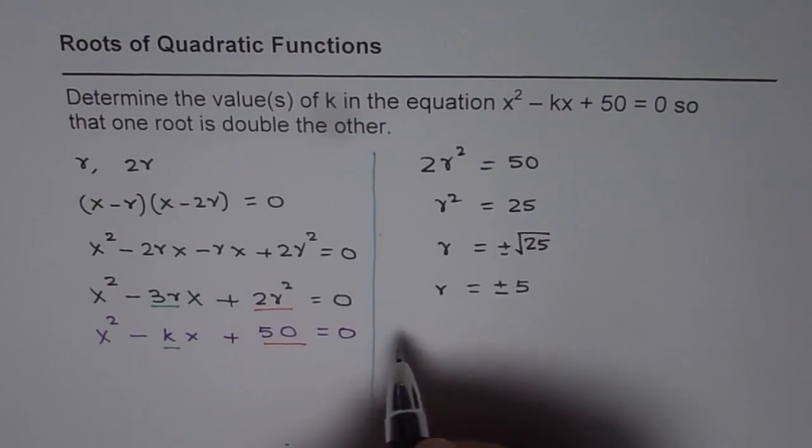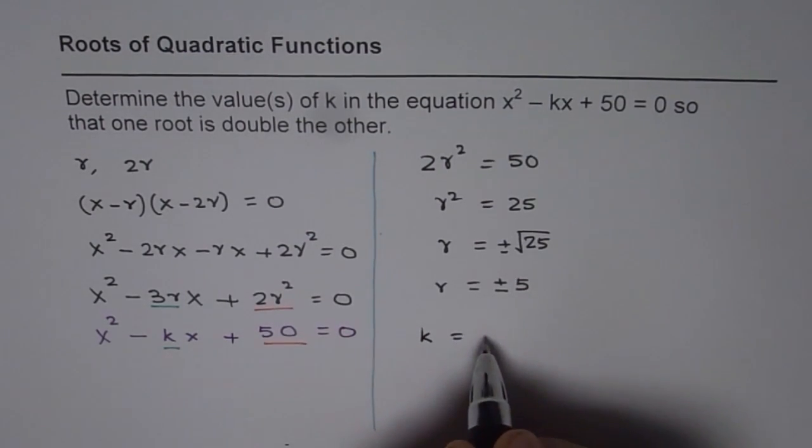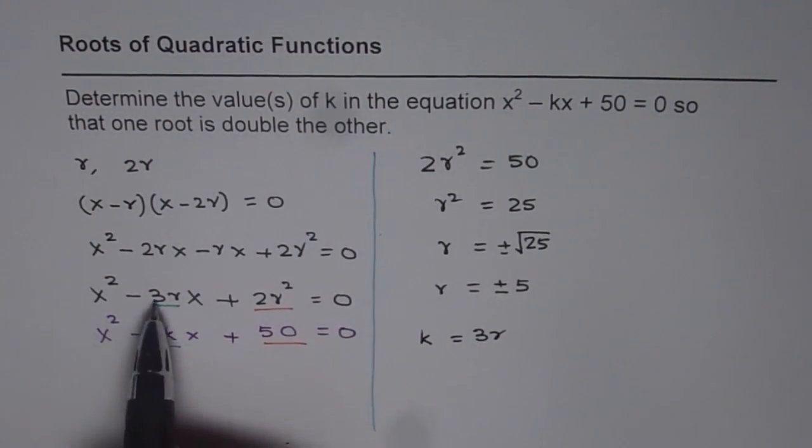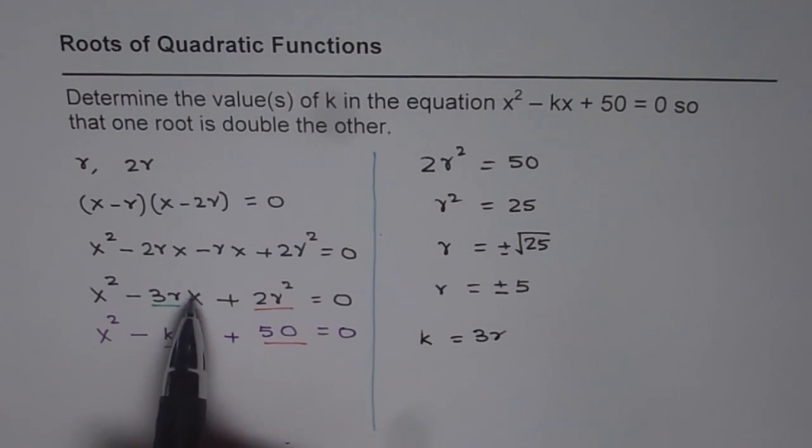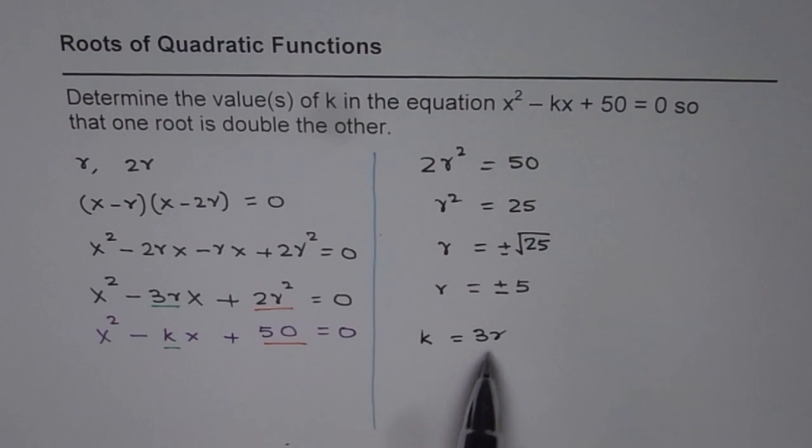We get k = 3 times r, comparing the coefficients of x. So k = 3r.